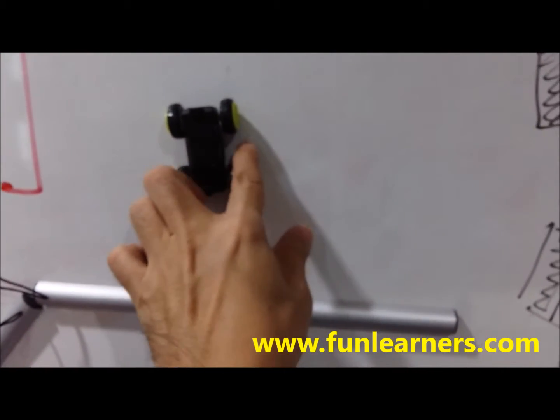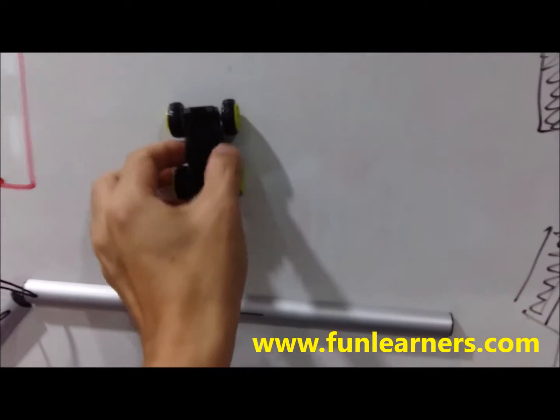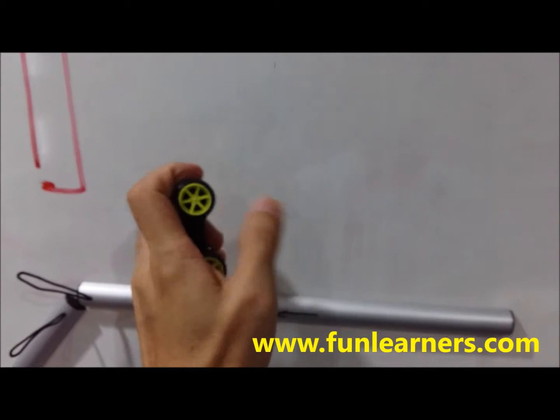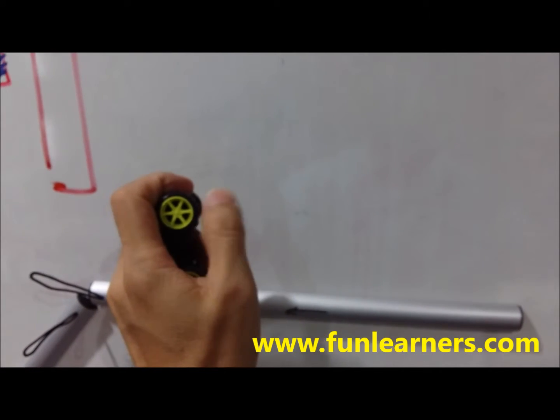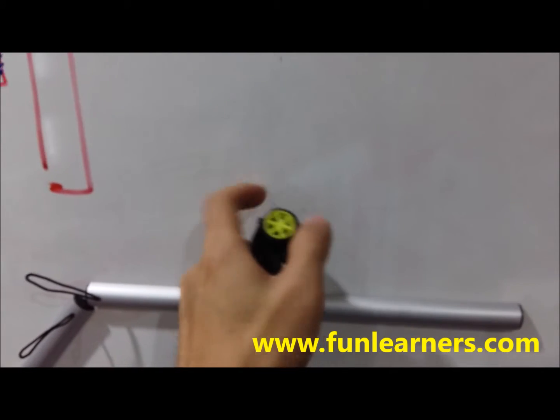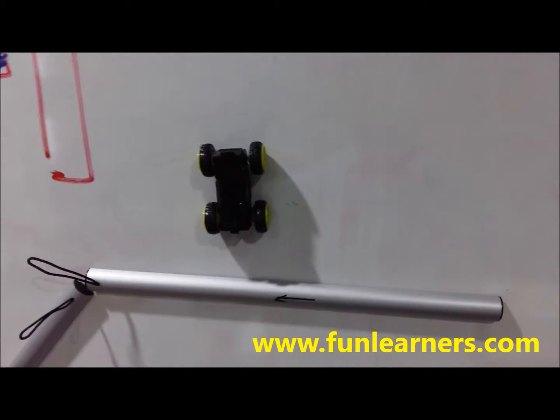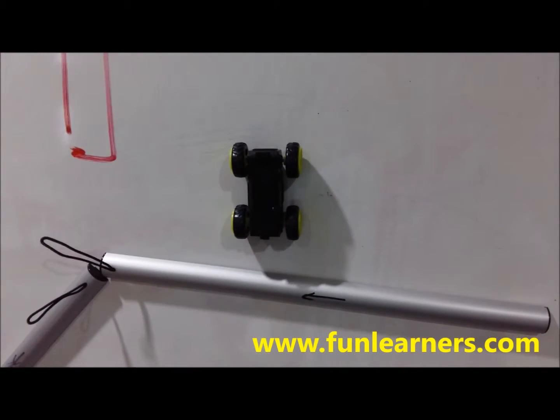But the strong magnetic force presses this rubber surface to the whiteboard surface. When this force is strong enough, the friction will increase - we call it a normal force.